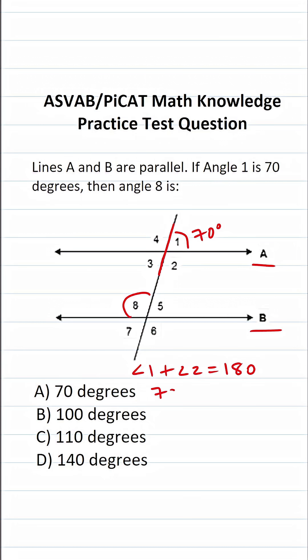We know that angle 1 is 70 degrees, so 70 plus angle 2 must equal 180. We can determine the value of angle 2 by subtracting 70. This gives us angle 2 equals 180 minus 70, or 110 degrees.